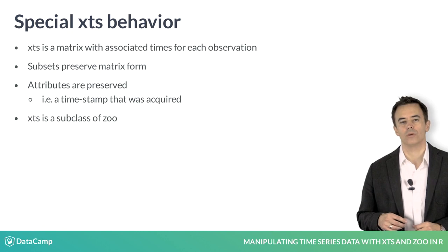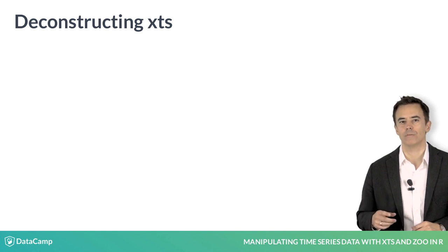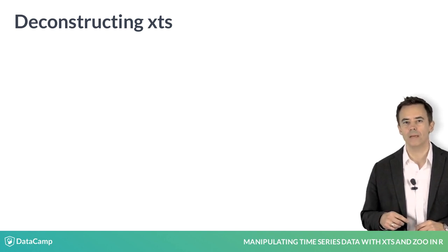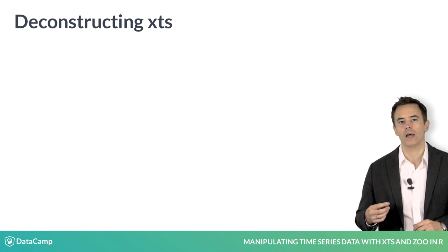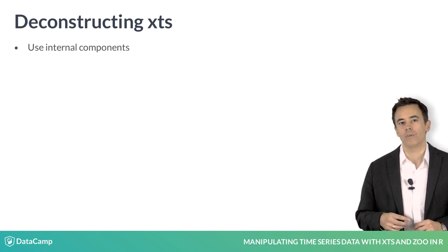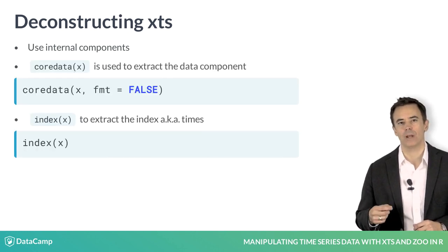One last point before we break out the exercises. Sometimes it'll be necessary to reverse the steps we took to create the time series and instead extract our raw data or raw times for use in other contexts. XTS provides two functions: coredata() is how you get the raw matrix back, and index() is how you extract the dates or times. Simple and effective.